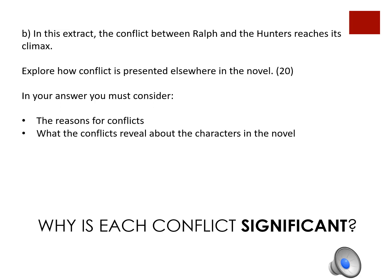This is an example Part B question that is different from the one that will be completed in the actual exam. It says: 'In this extract, the conflict between Ralph and the Hunters reaches its climax. Explore how conflict is presented elsewhere in the novel.' To begin planning for this response, students first need to think about two or three appropriate extracts to look at within the text. The important thing is to think, firstly, what are good examples of conflict occurring in the novel, and then most importantly, in each example, why is that conflict significant?